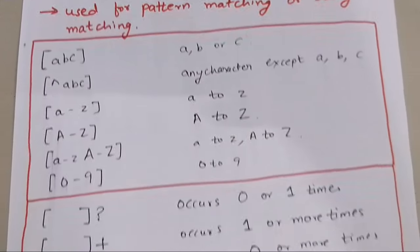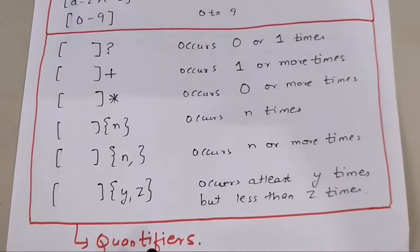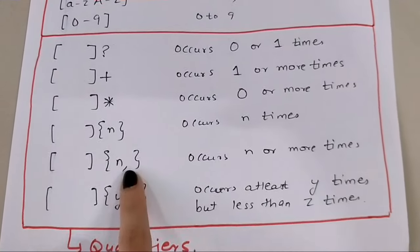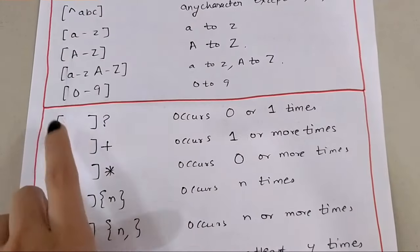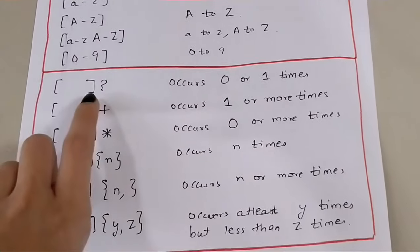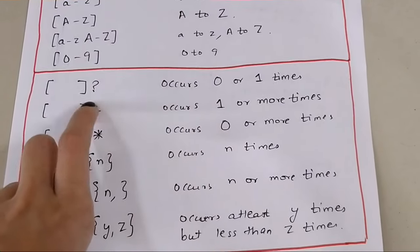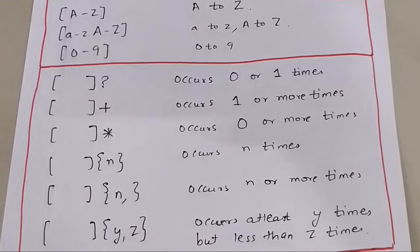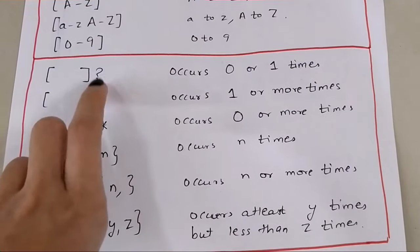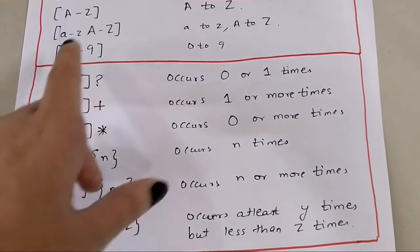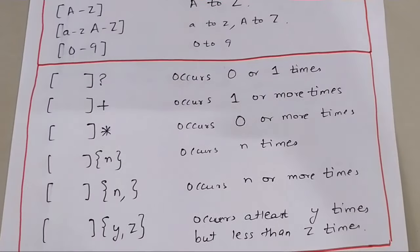Now these are quantifiers — let's understand what quantifiers are in regex. Using quantifiers we can tell the computer about repetition. When we write a question mark, it basically means whatever rule is written inside, it can occur zero or one times.